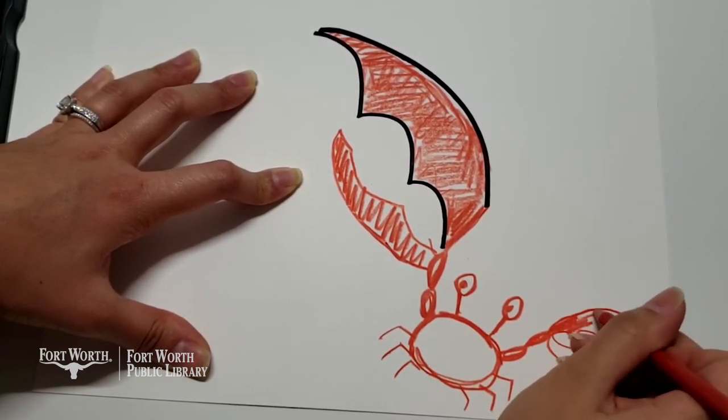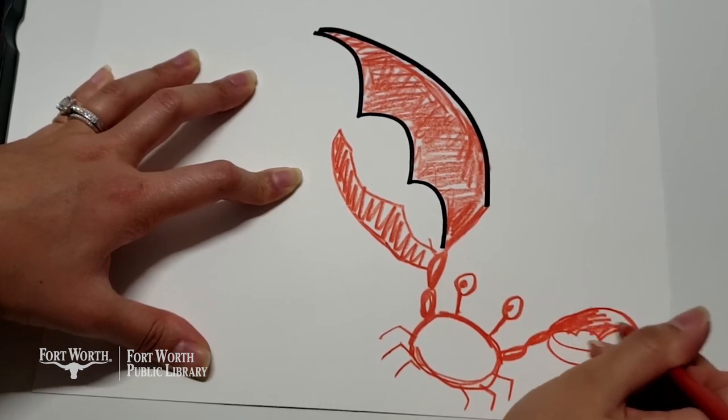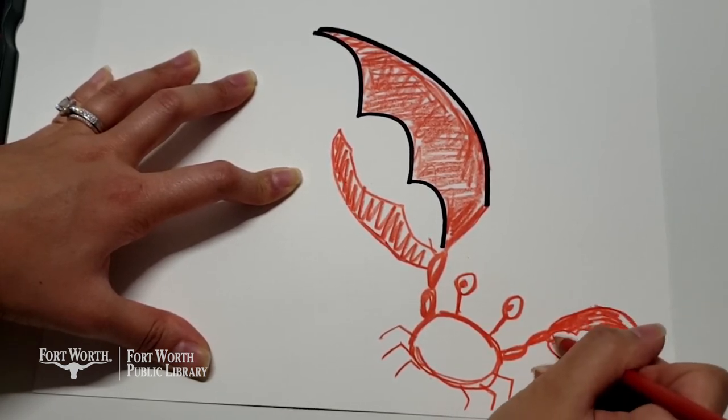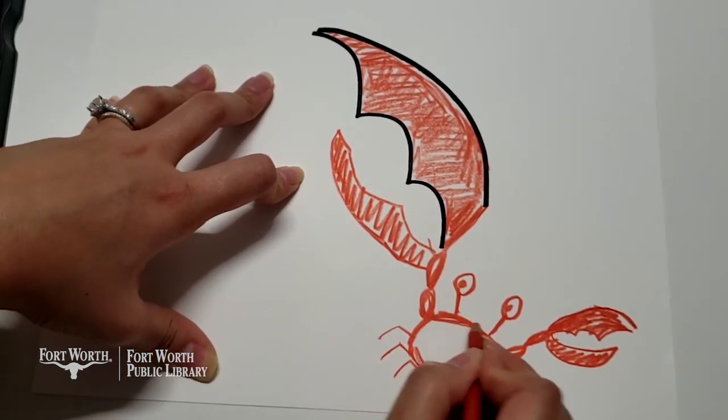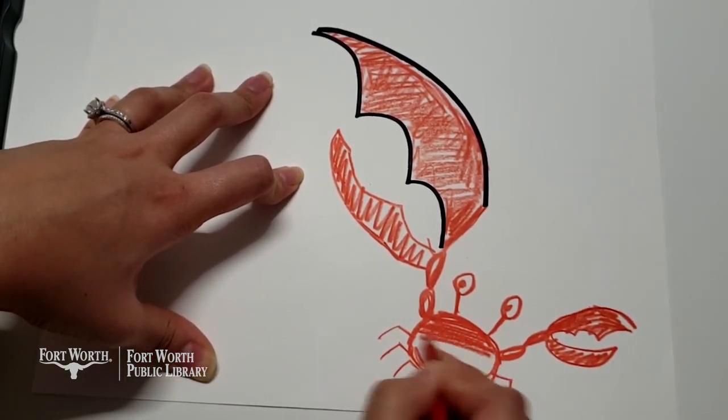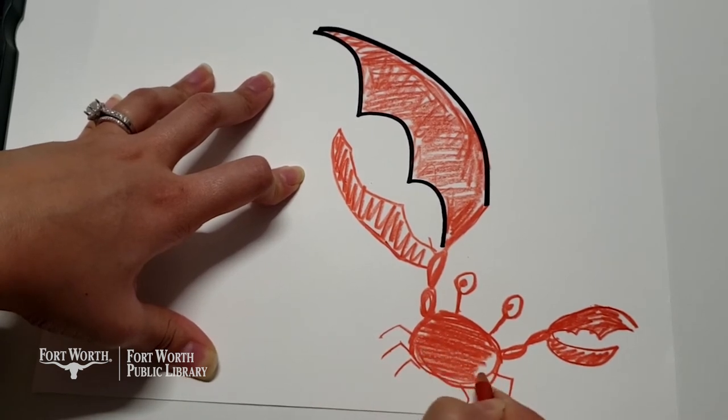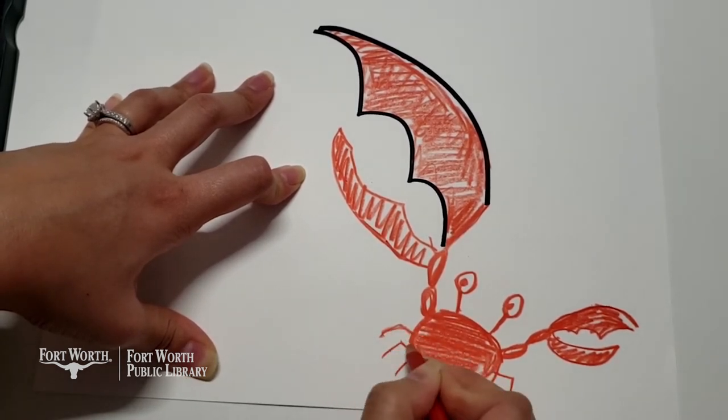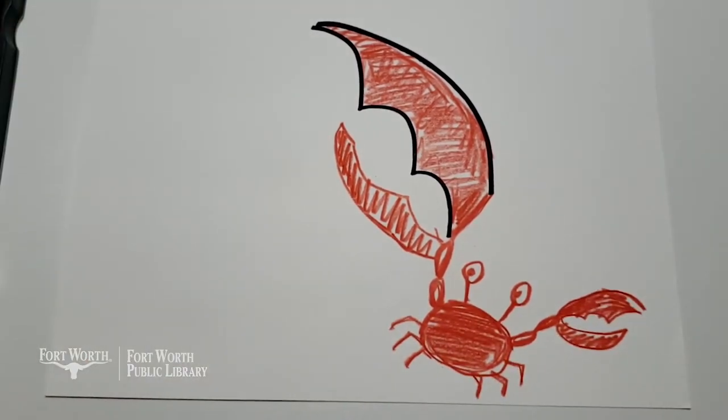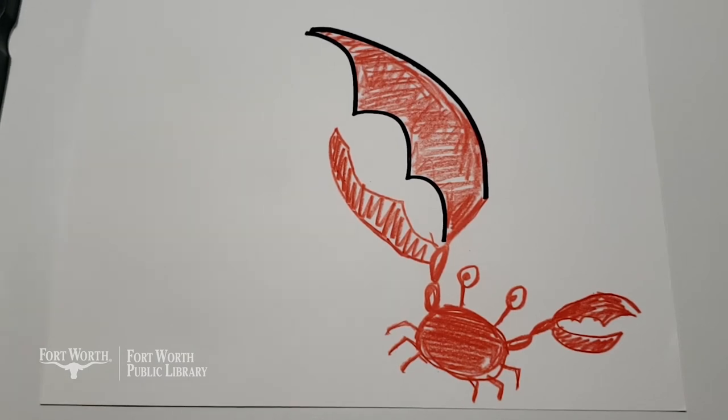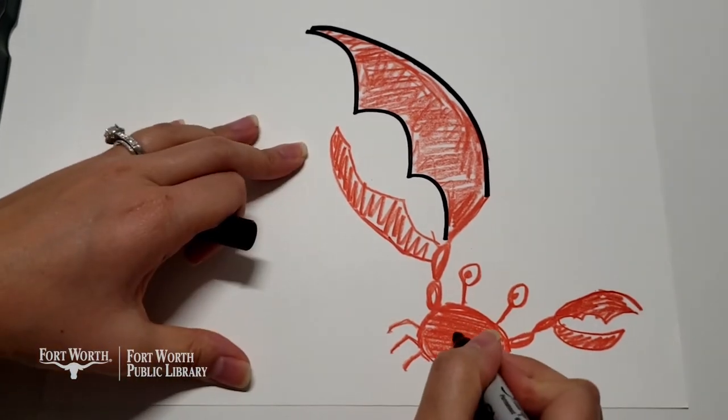So there's my drawing, it is not a bat, it is a cute little crab. I have my little crab, you know what, I'm gonna give my little crab a nice little smile. Hmm, there's my crab.